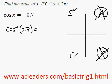Let's find out what that is: cos inverse of 0.7. I'm using my calculator here and I get the value of 0.795.